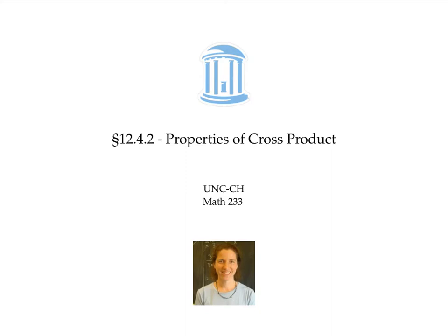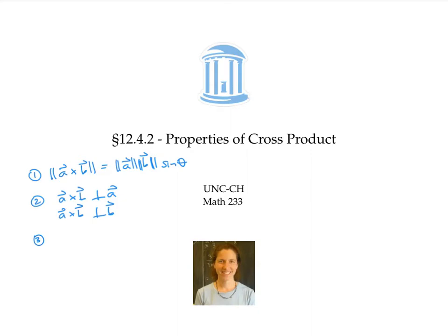This video proves two facts about cross product and gives an informal justification of a third. It proves that the length of the cross product is given by this formula, and also proves that A cross B is perpendicular to both A and B. The video gives an informal justification of the fact that the direction of A cross B is given by the right-hand rule.